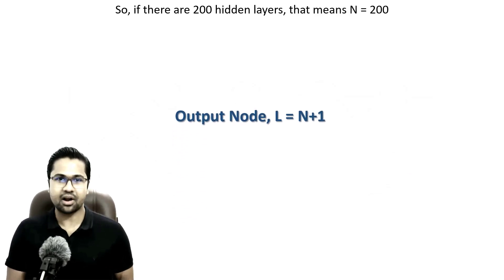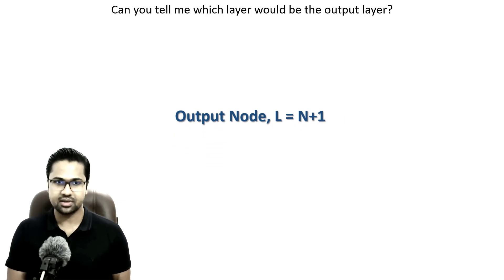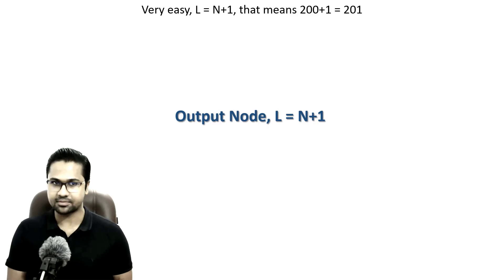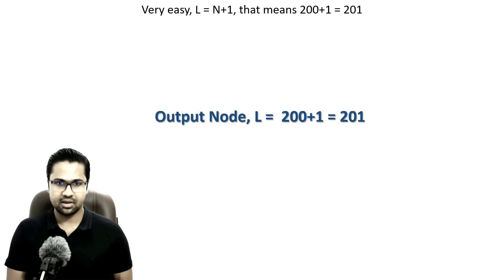So if there are 200 hidden layers, that means n equals 200, can you tell me which layer would be the output layer? Very easy. L equals n plus 1. That means 200 plus 1. So 201th layer. So 201th layer is our output layer.